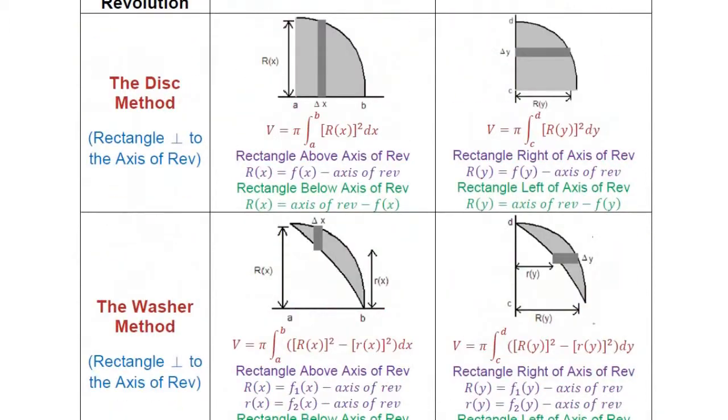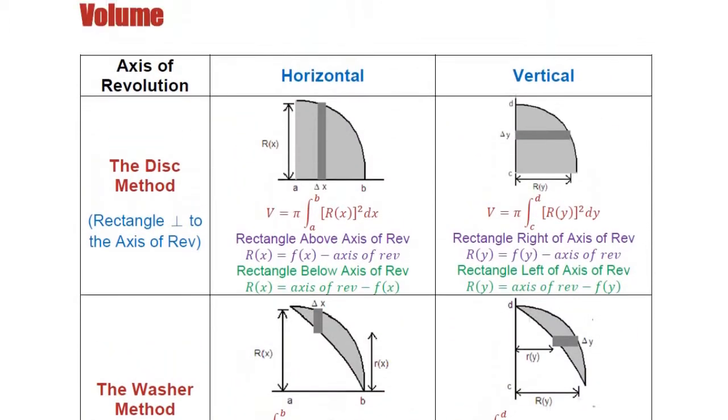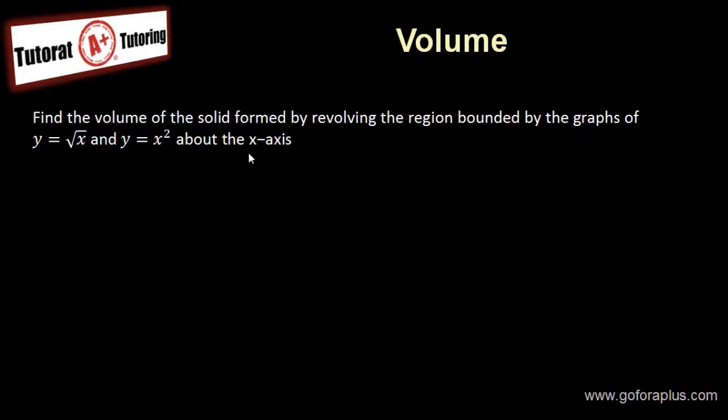So in this case, which method should I be using? You need to analyze that. Find the volume of the solid formed by revolving the region bounded by the graph of y equals square root of x and y equals x-square about the x-axis.